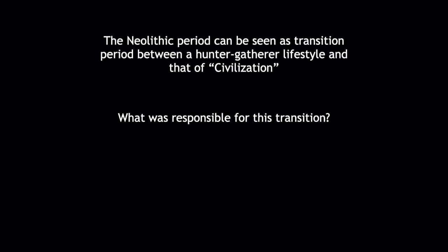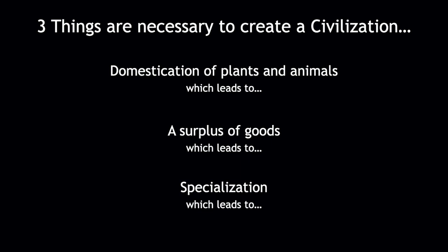So now the question is: how did this happen specifically, and what is ultimately responsible for this transition? Three basic things need to happen in this order. First, you need to domesticate plants and animals — create gardens and have pens with sheep and goats. If you do that, then you get a surplus of goods. You've grown enough wheat that you don't need to eat it all and can put some away for later, and if you have extra animals or enough wheat to feed you over the winter, you have time to do other things — and that leads to specialization.